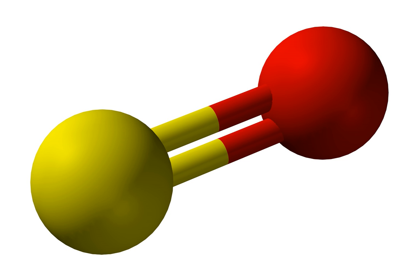The SO molecule has a triplet ground state similar to O2, meaning each molecule has two unpaired electrons.